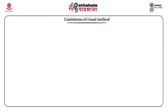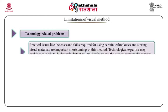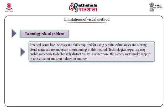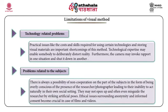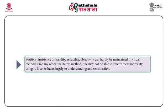Now, the limitations of visual method. First, technology-related problems: practical issues like the costs and skills required for using certain technologies and storing visual materials are important shortcomings. Technological expertise may also enable somebody to deliberately distort reality. Furthermore, the camera may invoke rapport in one situation and shut it down in another. Problems related to subjects: there is always a possibility of non-cooperation, with subjects being overly conscious of the researcher-photographer's presence, leading to inability to act naturally. They may not open up and may even misguide the researcher by striking artificial poses.